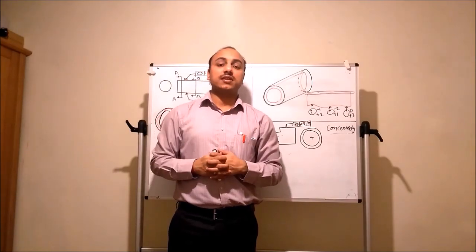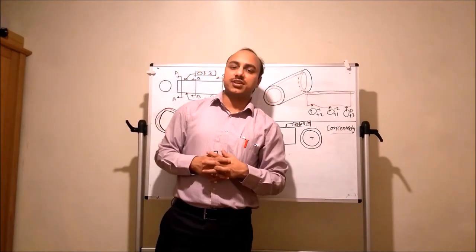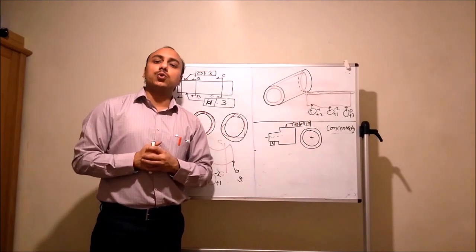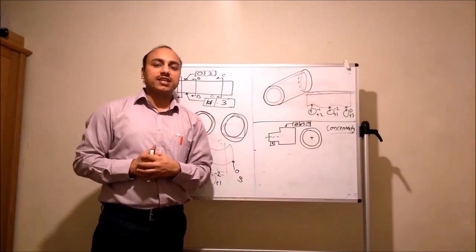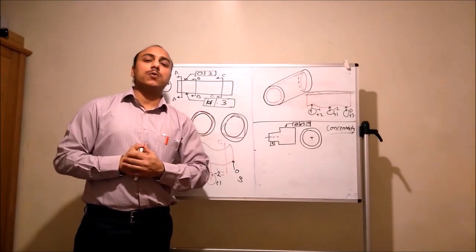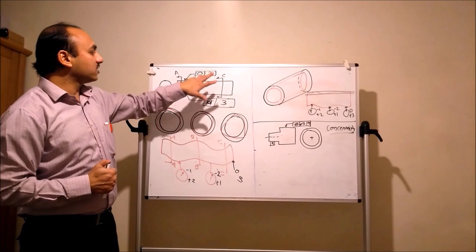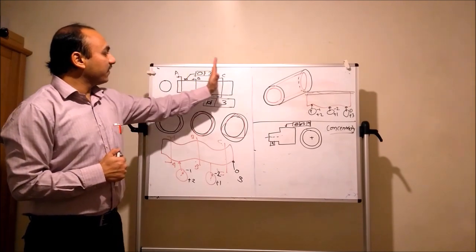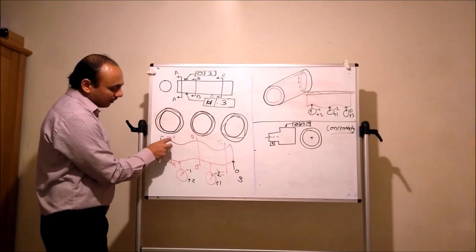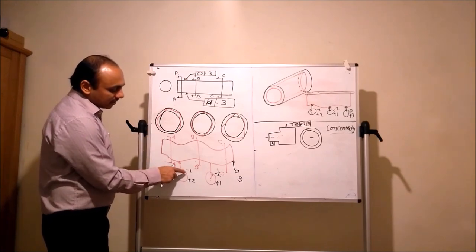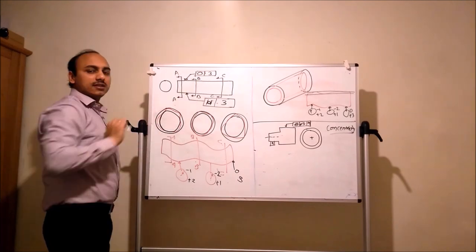What is the difference between circularity and cylindricity? In case of circularity, the tolerance zone is two concentric circles within which the surface profile must lie. Suppose we have a cylinder with a circularity of 3. If we cut at section AA and rotate the part with a dial gauge, and the dial dips from minus 1 to plus 2, the difference is 3 — within the zone, so it is accepted.